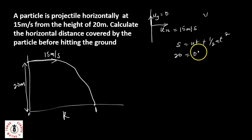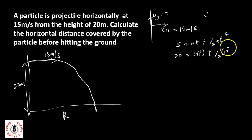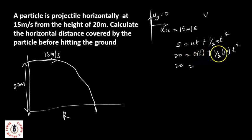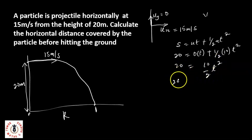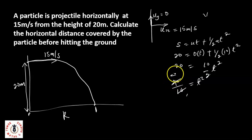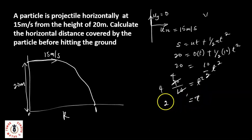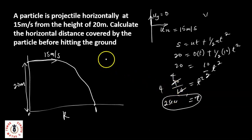So vertically: 20 equals 0 times t plus half times 10 times t squared, which gives 20 equals 5t squared. Cross-multiplying: 40 over 10 equals t squared, so t squared equals 4. Taking the square root of both sides, t equals 2 seconds. We've found the time of flight to be 2 seconds.